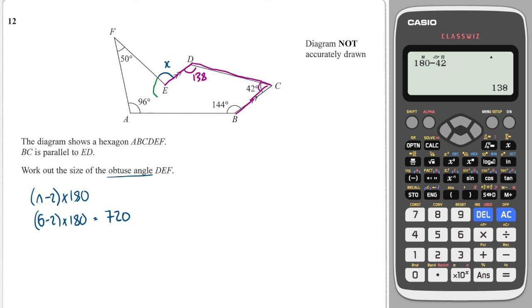And that means now we can work out this green angle here. Because we have all other five of the angles in the polygon, which is a hexagon. So we can do 720 minus 50 minus 96 minus 138 minus 144 and minus 42. And this gives me 250. So my final answer for x will be 360 minus 250, which is 110. So we have the angle is equal to 110.